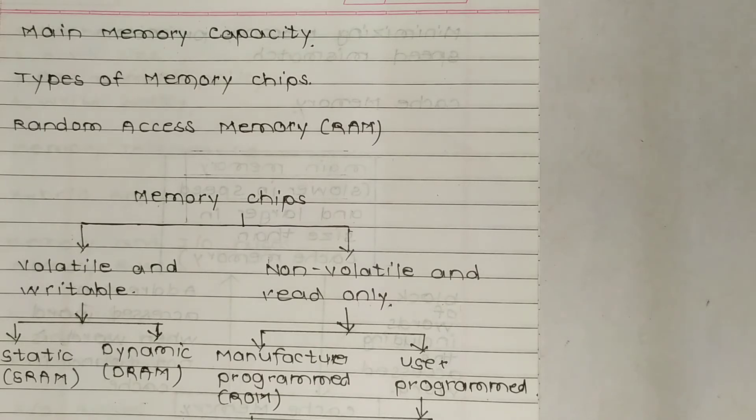Sometimes we also state memory capacity of a computer system in terms of number of words. A memory having 2 raised to 15 words with each word of 16 bits is called 32 kilobyte or 16-bit memory.